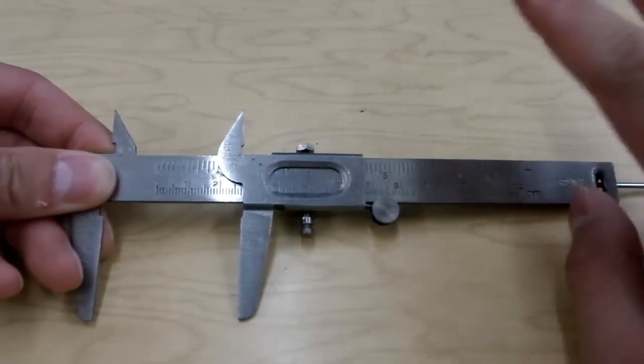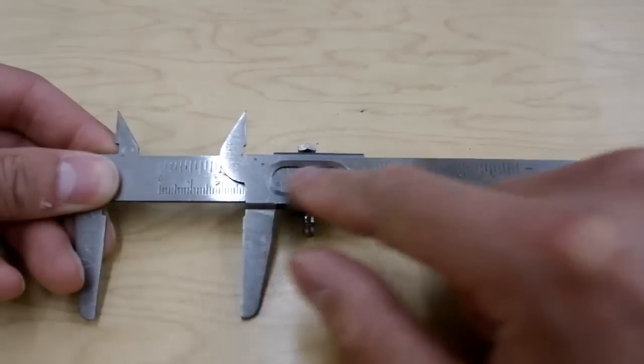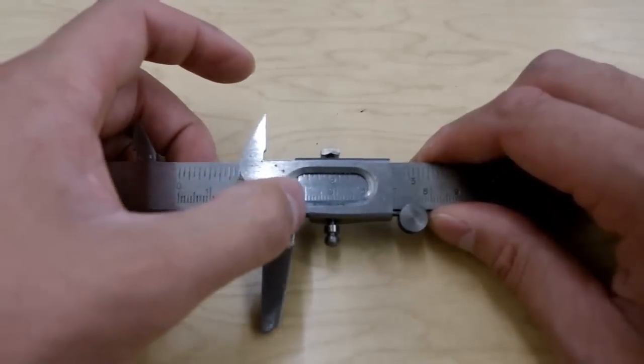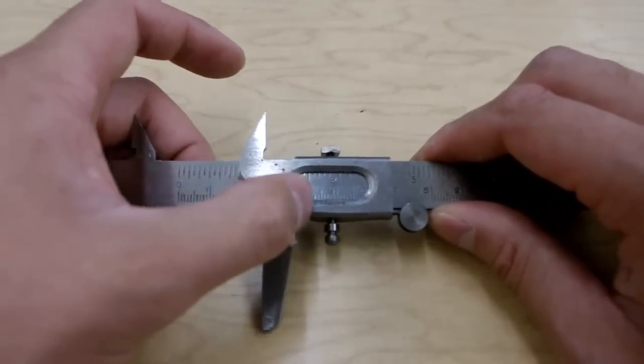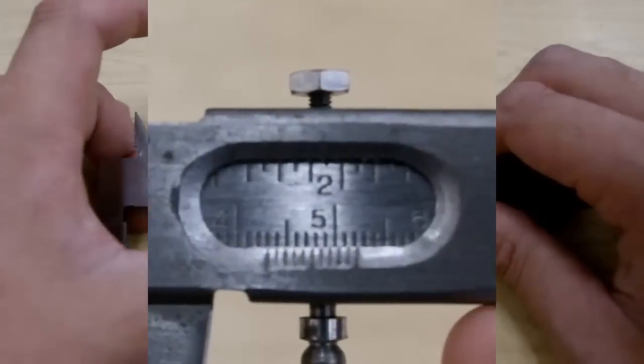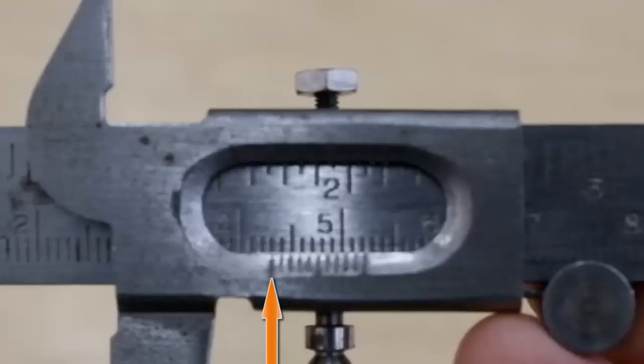Now, the first two digits, meaning your centimeter and millimeter digits, you will read from the regular ruler. But where do you read it? You read it on all these lines on the bottom here. You read from the left-most line, and you'll see that it seems like it's between 4.3 and 4.4. So that means it's 43 point something millimeters.